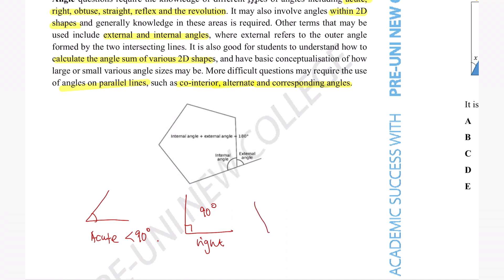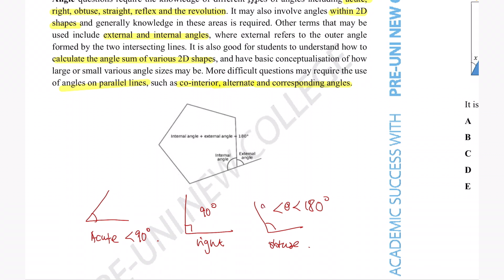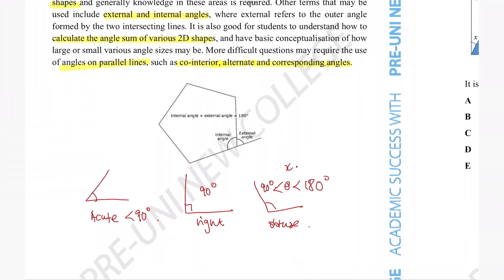The next angle is called the obtuse angle. Obtuse angles have to be bigger than 90 degrees but smaller than 180 degrees. The symbol θ (theta) is the Greek symbol generally used by mathematicians to represent an angle. If you're not familiar with it, just replace it with any other letter you know, since it does the same job.